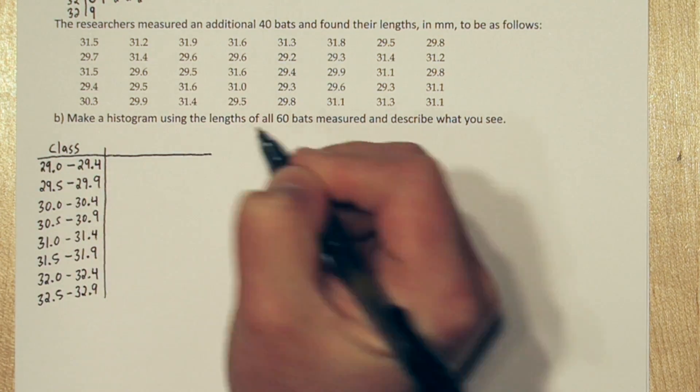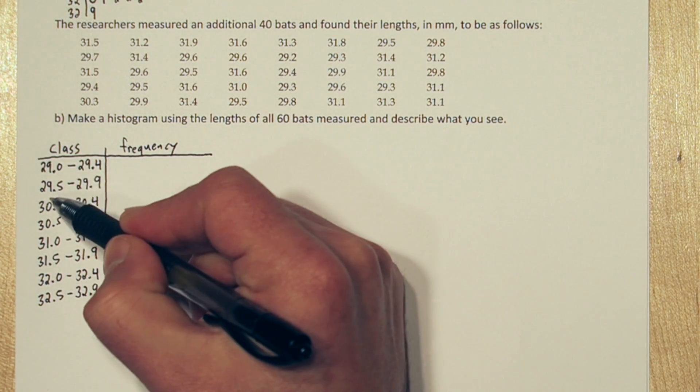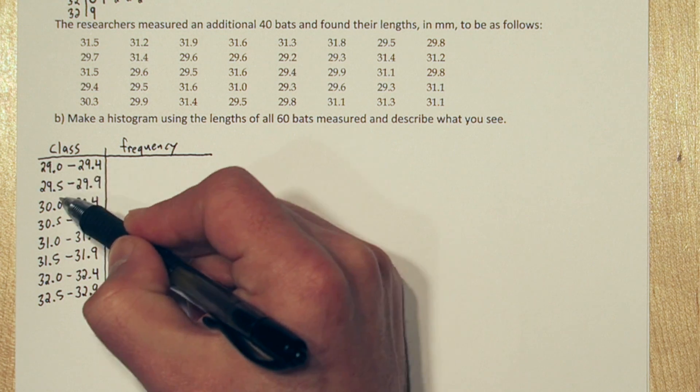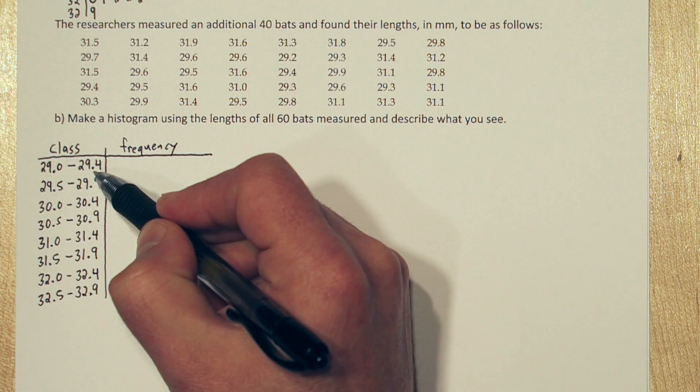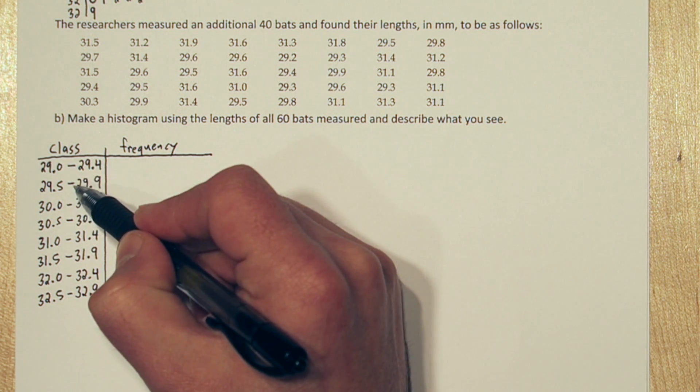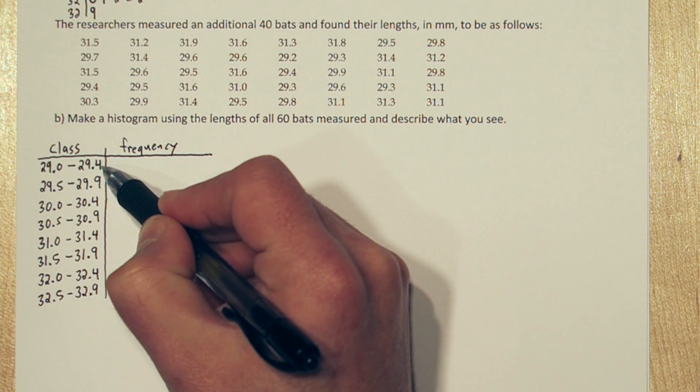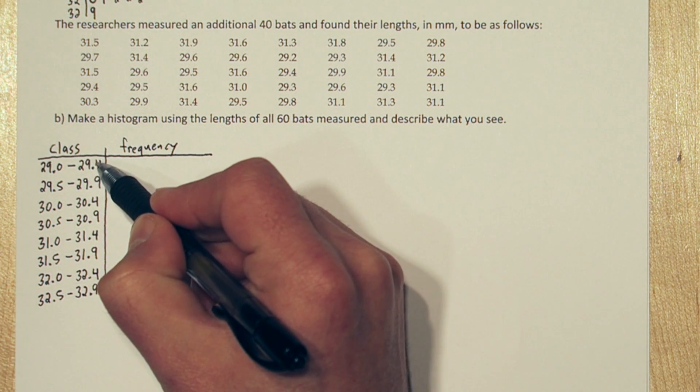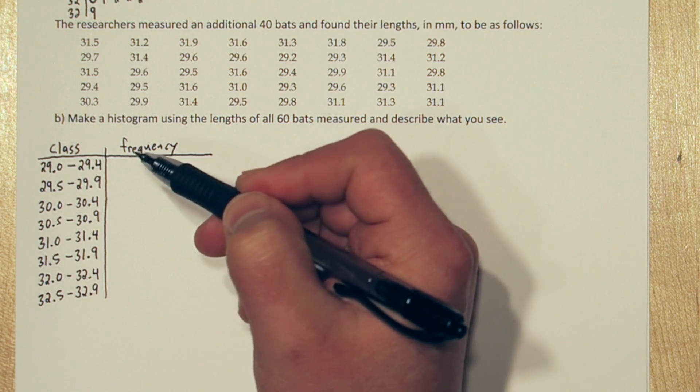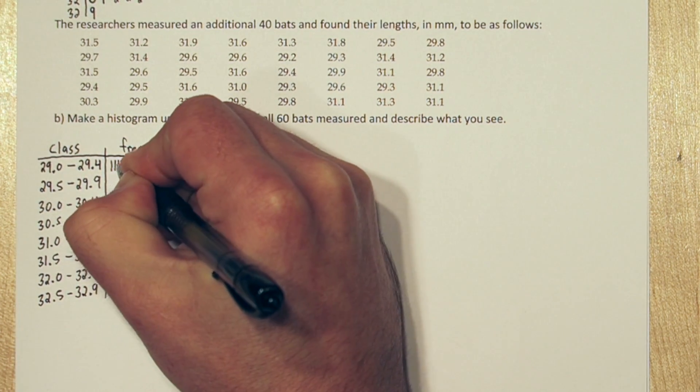Now technically speaking, it looks like these classes have gaps between them. Like for example, from 29.4 to 29.5, there's actually values that exist in between them. So let's pretend this is for any bat length that has a 4 as the 10th digit there. So even if it was 29.49, we would still put it up in this class. But all of our bat lengths are rounded to the nearest 10th, so we don't really need to worry about that right now. So we're going to go through all the bat lengths, the 20 on top and the 40 on bottom, and tally up the frequencies.